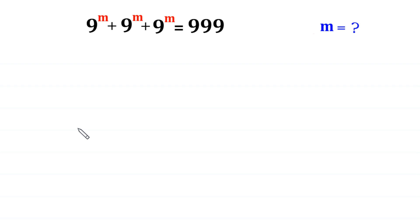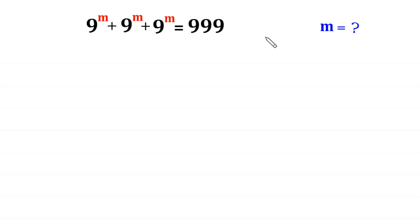Hello, welcome to how to solve this very nice exponential equation. 9 to the power m plus 9 to the power m plus 9 to the power m is equal to 999. We need to find the value of m.